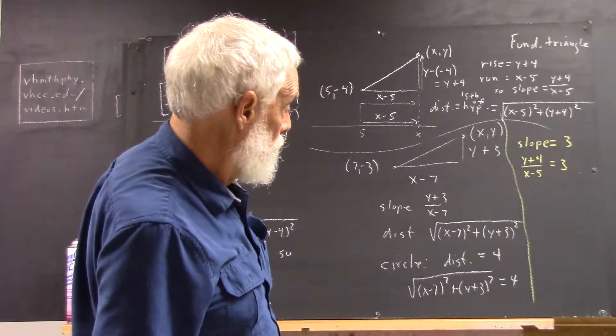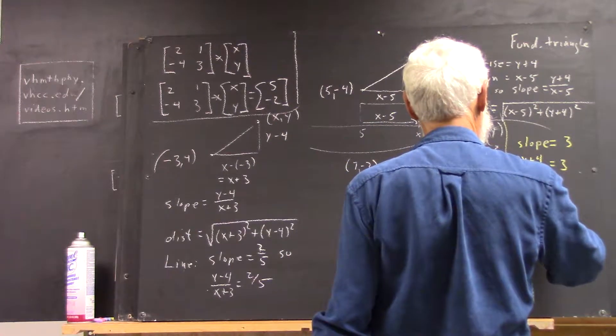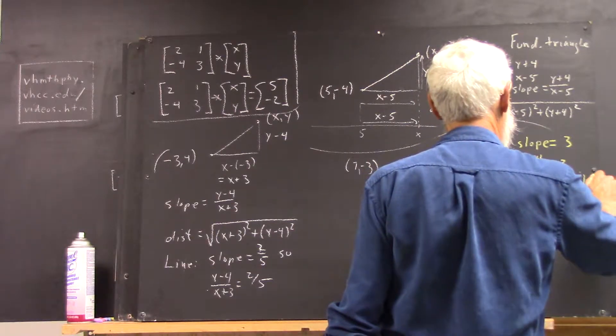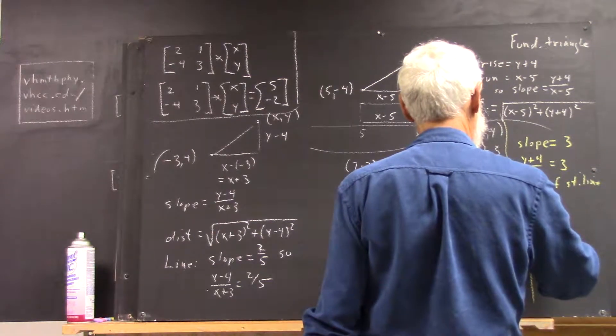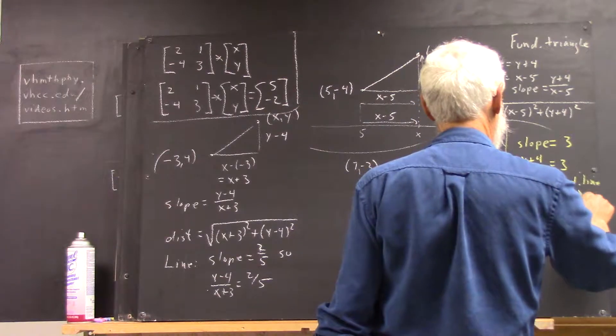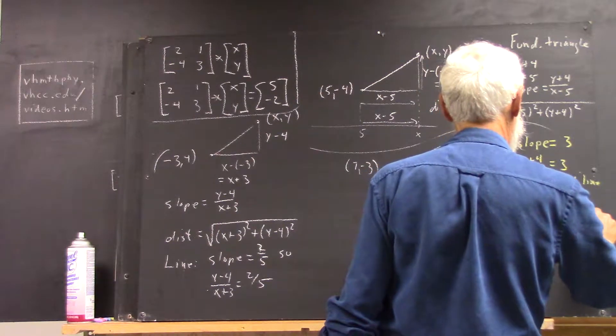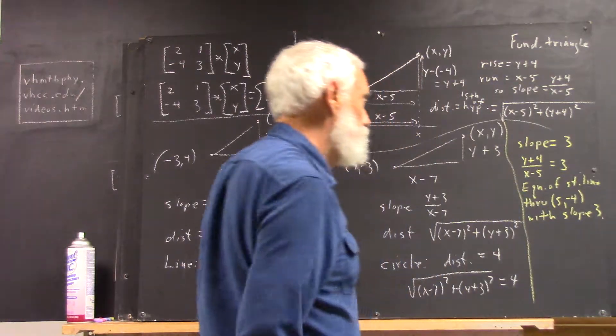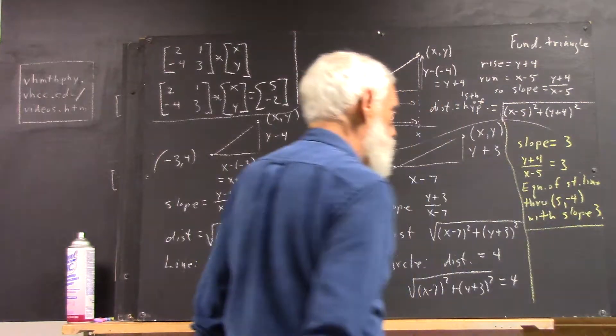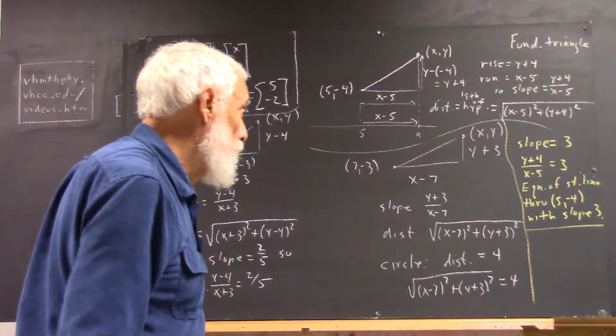And this is the equation of the straight line through 5, negative 4 with slope 3. That's it. It's the equation of the line. Do a little algebra and put it in different form. You can put it in slope-intercept form. You can put it in standard form. You can do just about anything with it.